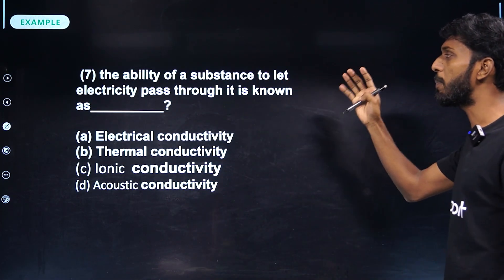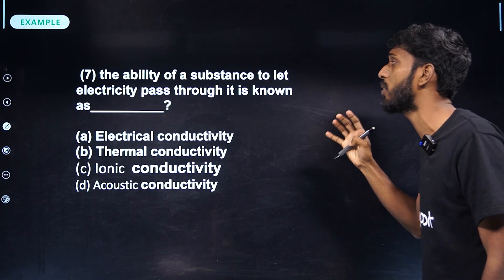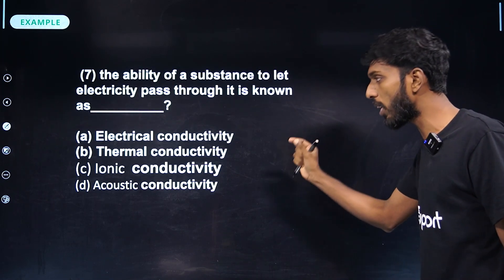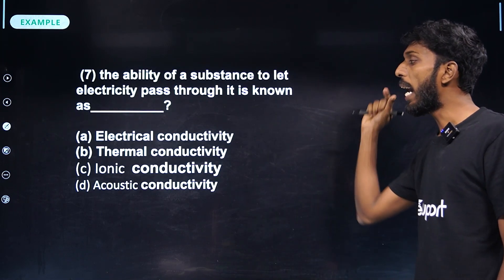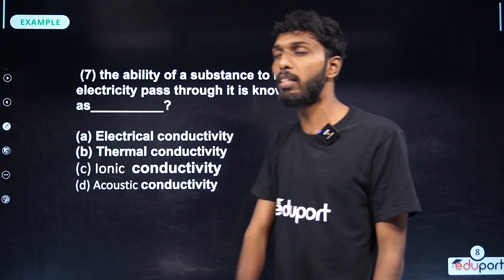The ability of a substance to let electricity pass through it is known as electrical conductivity, thermal conductivity, ionic conductivity, or acoustic conductivity.